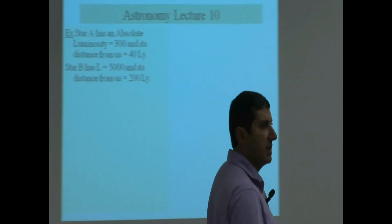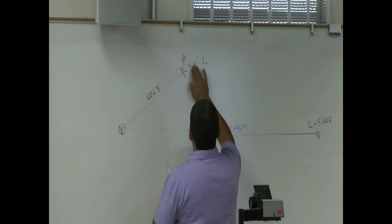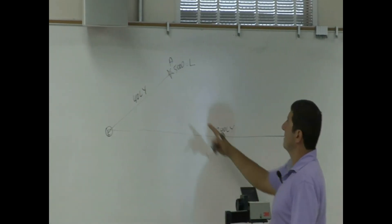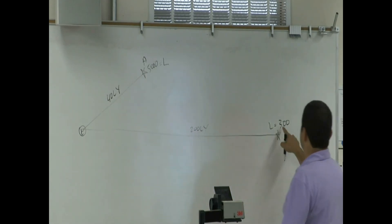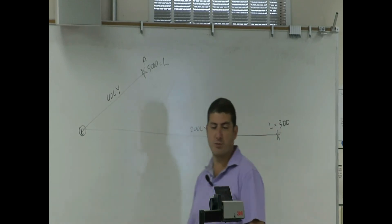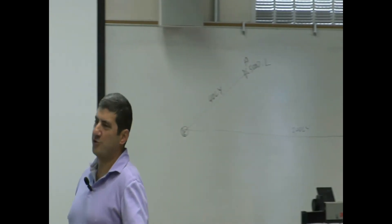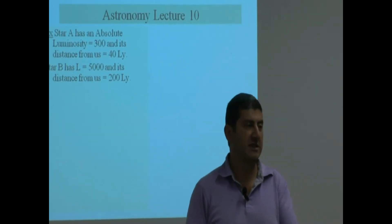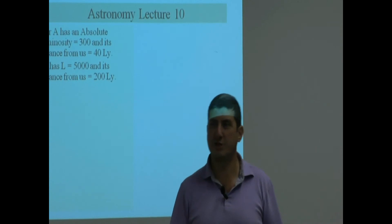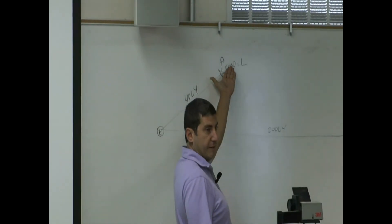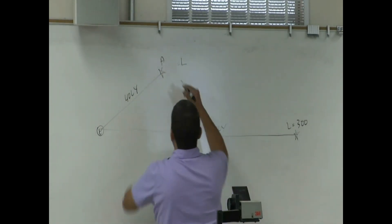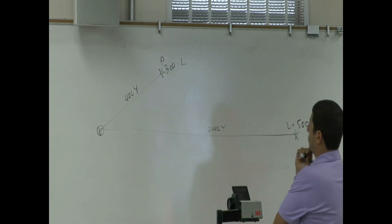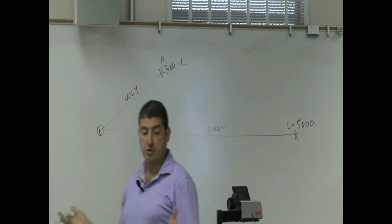If I had reversed the values — 5,000 times as bright at 40 light years, and 300 times as bright at 200 light years — the answer would be obvious: the much brighter, closer star wins. You wouldn't need the equation. But in the original problem, this star is brighter but farther, and the other is dimmer but closer, so you're forced to use the equation to find which appears brighter.